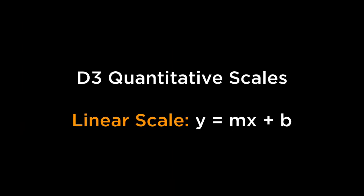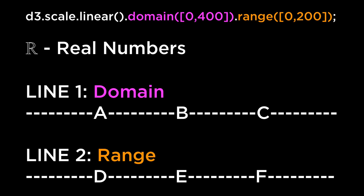D3 Quantitative Scales are for continuous input domains, such as numbers or dates and times. The mapping is linear in that the output range y can be expressed as a linear function of the input domain x. The domain is line 1, the range is line 2. The range is thus the result of the y = mx + b transformation from line 1 to line 2. The leftmost element in line 1 gets transformed to the leftmost element in line 2, the rightmost to the rightmost, and the middle elements similarly.